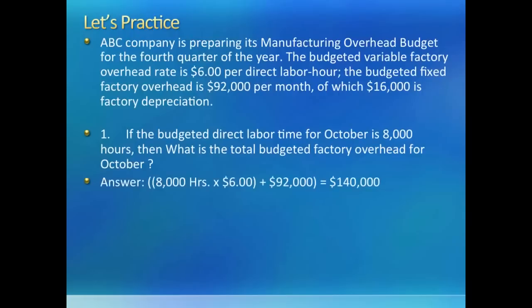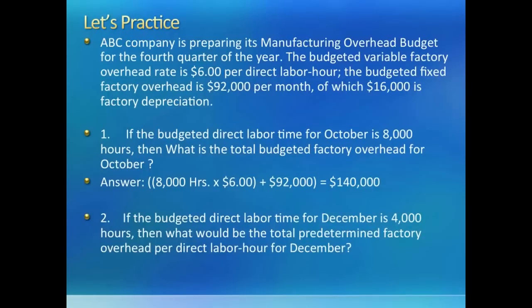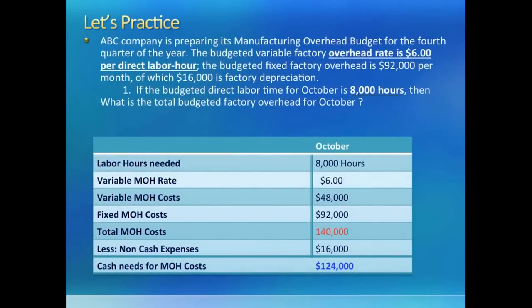The next problem has a slight twist — it asks you to calculate an overhead rate for all manufacturing overheads for the month of December. Here are the details of the first problem solution. Remember to be careful about what the question is asking. The question is about total budgeted overheads, so the answer is $140,000. But if the question was about cash disbursements for manufacturing overheads, the answer would be $124,000, because we do not have to pay cash for depreciation.